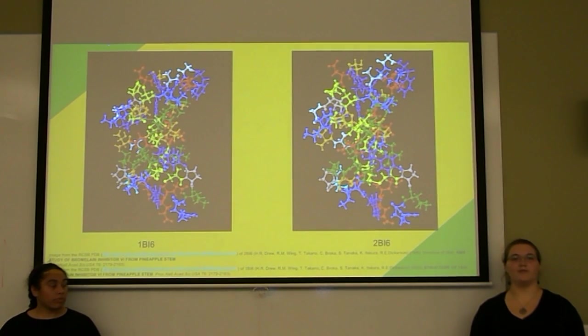The extraction and purification of stem bromelain is important because bromelain is an enzyme comprised of many different enzymes. For example, other protease enzymes found within bromelain are stem bromelain, fruit bromelain, ananain, and comosain.